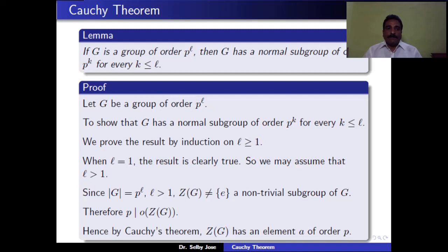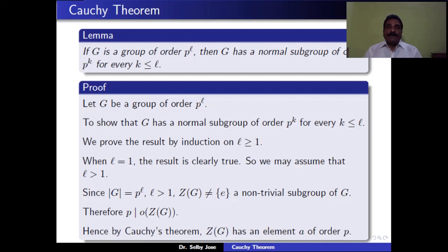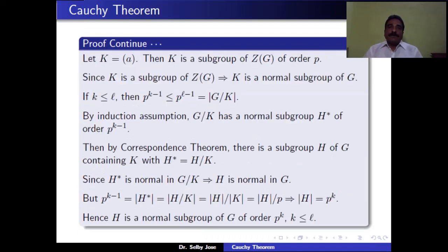Assume L > 1 and let G be a group of order P^L. Since G is a P-group, the center Z(G) is non-trivial, so it contains more than one element. By Lagrange's theorem, |Z(G)| divides P^L, so |Z(G)| is a power of P, meaning P divides |Z(G)|. By Cauchy's theorem, Z(G) has an element of order P; let that element be A.